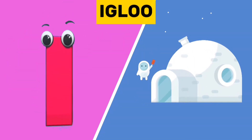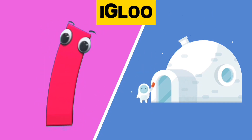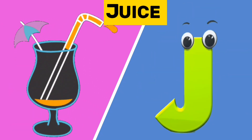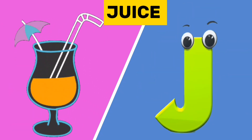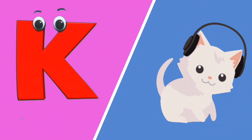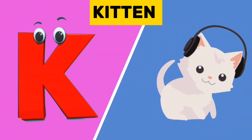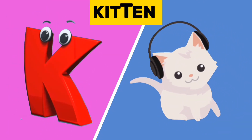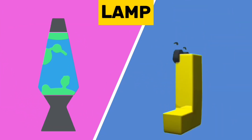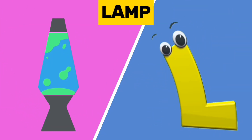I is for igloo. I, i, igloo. J is for juice. J, j, juice. K is for kitten. K, k, kitten. L is for lamb. L, l, lamb.